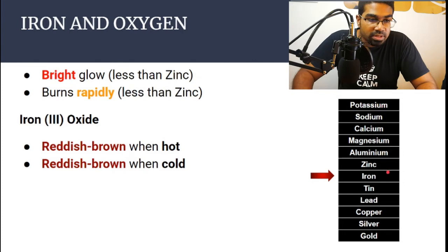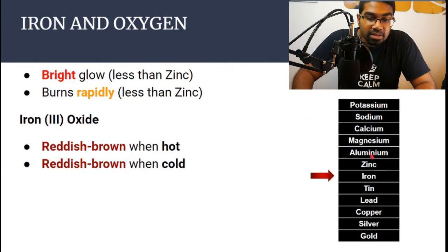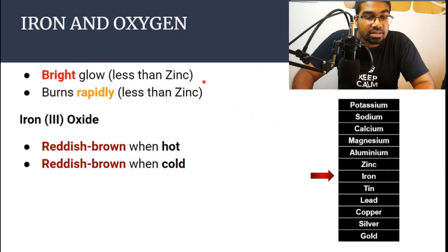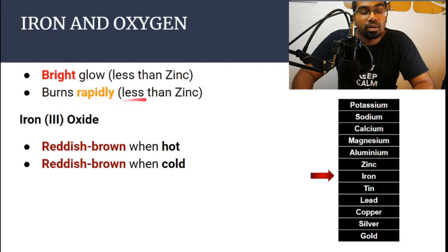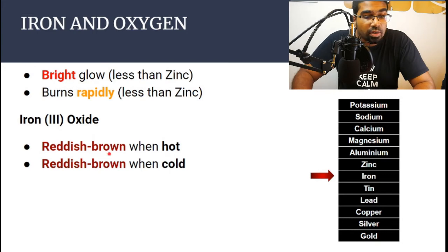Below zinc is iron, so now we are getting less and less reactive. Iron is less reactive than zinc. Iron also has a bright glow, although the glow will be noticeably less than zinc's. Same with the speed of reaction — iron will burn rapidly as well, however not as rapidly as zinc. The product is iron 3 oxide, which has a characteristic reddish brown color — the same color when hot and cold.